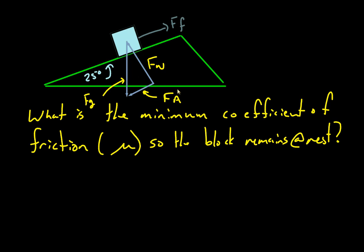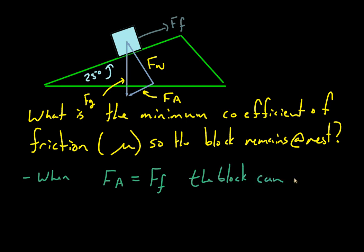So what we want to know is essentially at what coefficient of friction will the frictional force be large enough that it exactly equals F.A.? When F.A. is equaled by F.F., the block can remain at rest. Under these conditions, F.A. and F.F. — talking magnitude-wise — are pointing in different directions, so we want to say they're the same but pointing in opposite directions, and that's what our arrows indicate.